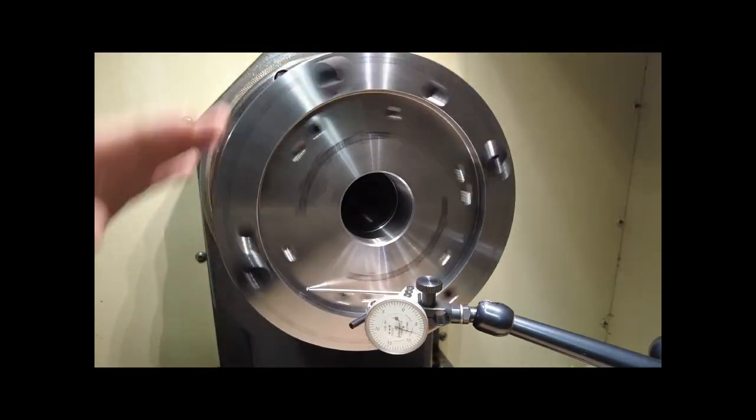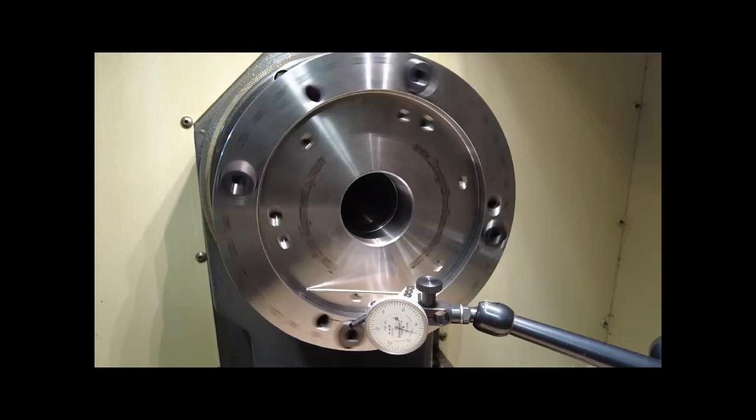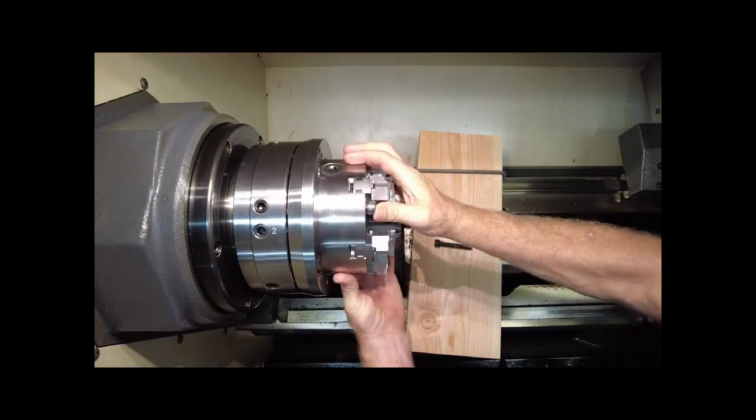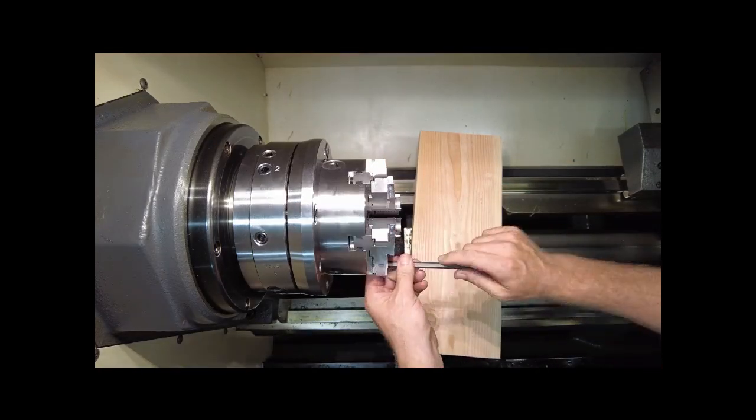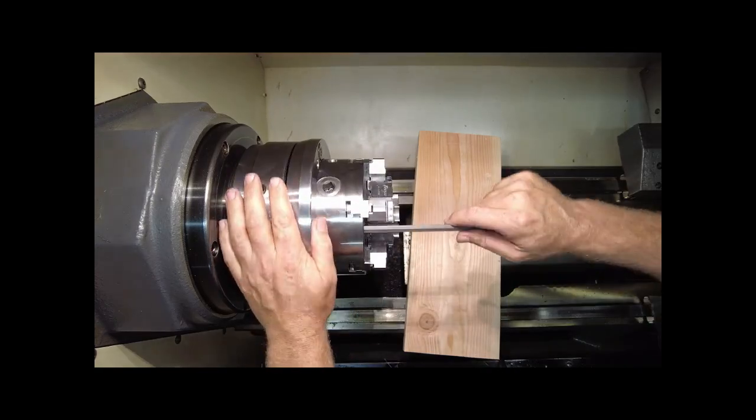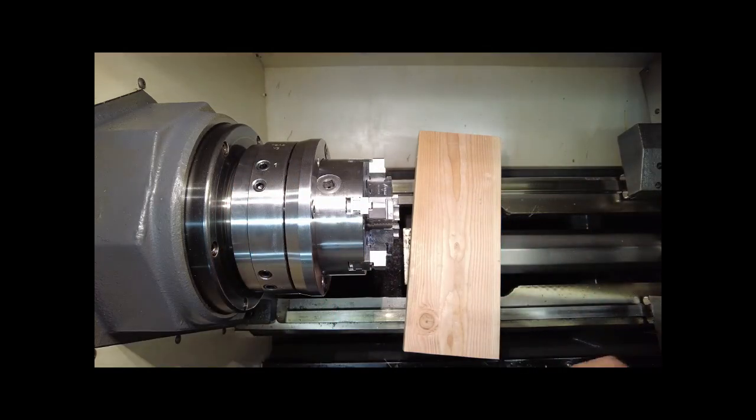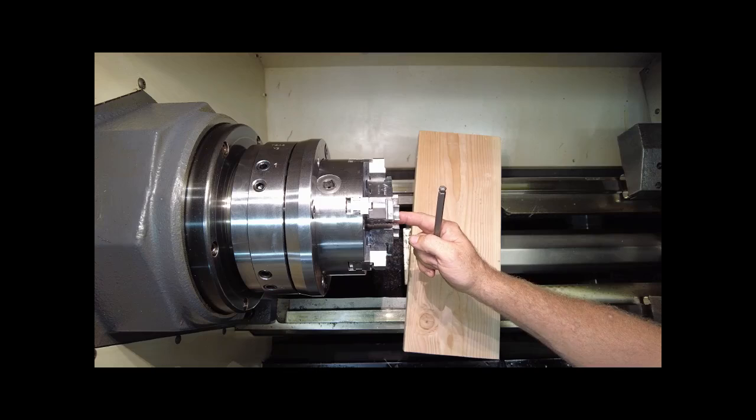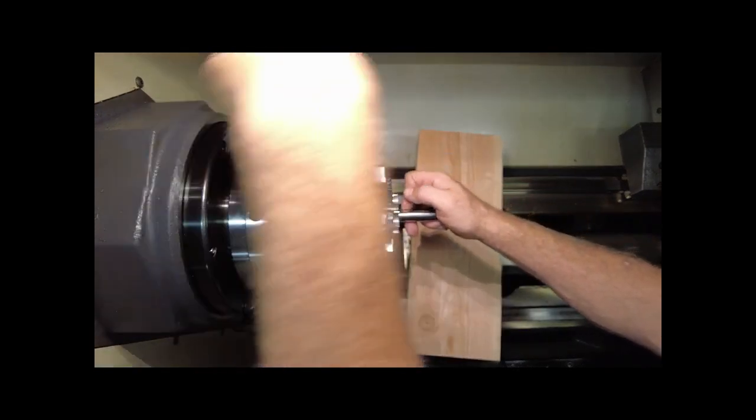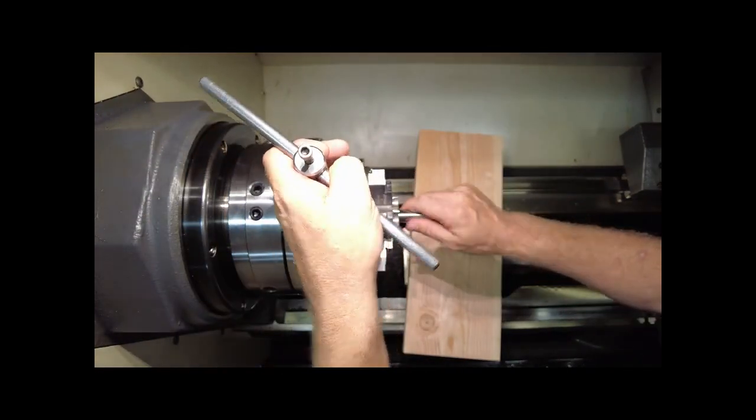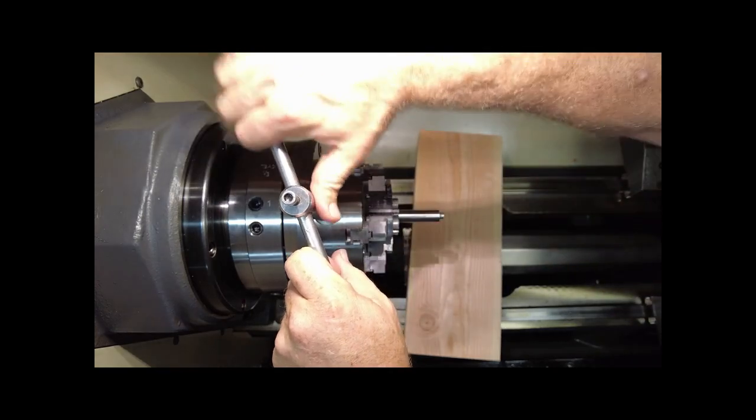Now that we have the runout under one thou it is now time to install the chuck. With the three ten millimeter mounting bolts lightly snugged it is now time to insert a shaft or ground mandrel into the chuck jaws for indicating. I'm using my action truing mandrel for this. Hand tight, make sure there's no crumbs between your jaws and your workpiece.